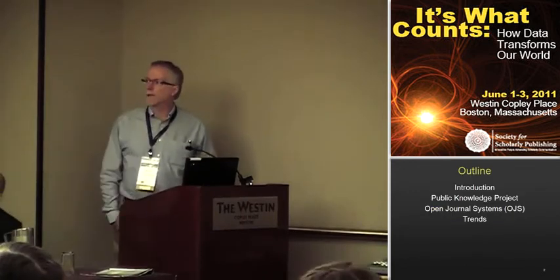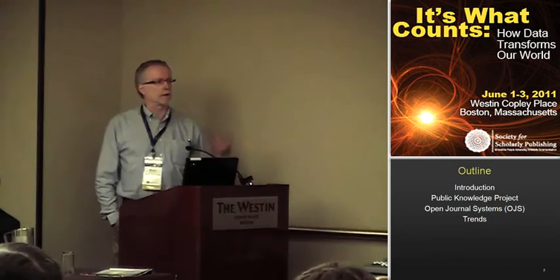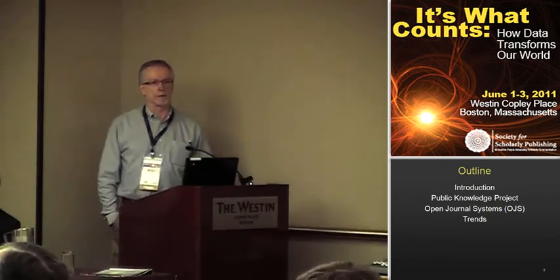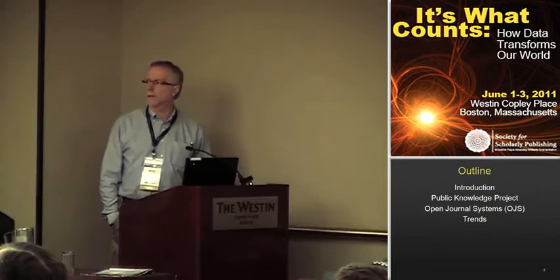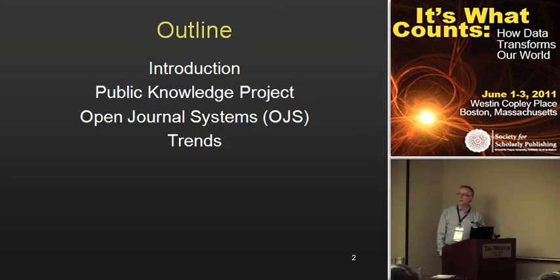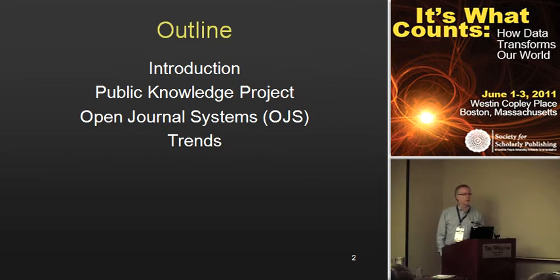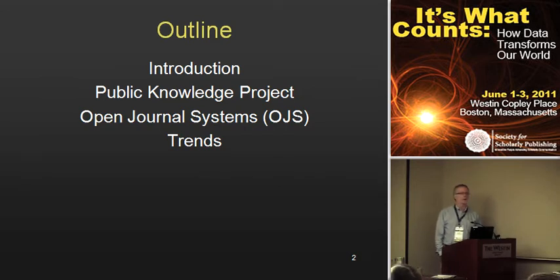Just a quick outline. As my introduction, I'm going to unpack the title of this session a little bit, just to clarify and put some context around things. I'll give a very quick overview of the Public Knowledge Project and a whirlwind tour of Open Journal Systems to show the range and variety of publications using it and the functionality that's there. I'm hoping to have a few minutes at the end to talk about some trends emerging from our experience with having an open source journal publishing platform out there.